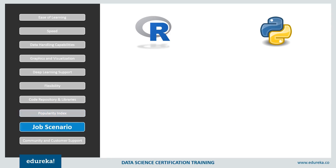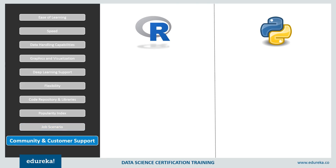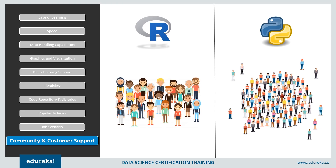Considering the job scenario, software companies have been more inclined toward technologies such as machine learning, artificial intelligence, and big data, which explains the growth in demand for Python developers. Although both languages can be used for statistics and analysis, Python has a slight edge due to its simplicity and ranks higher in job trends. For community and customer support, neither R nor Python offers paid customer service, but both have online communities, with Python having a greater community support compared to R.